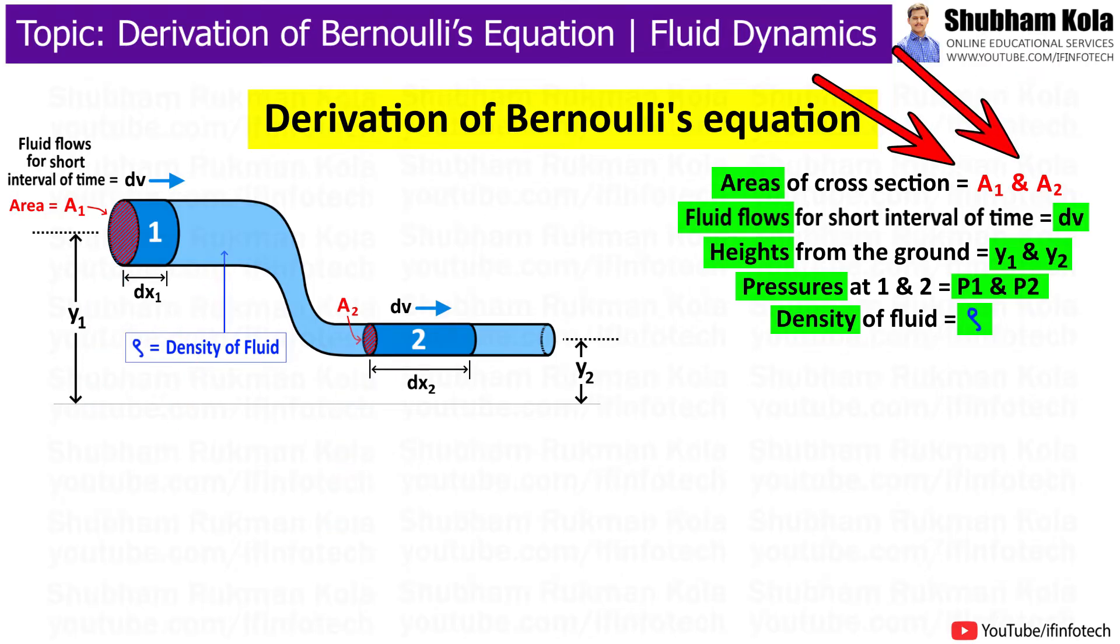The area of cross-section represents as A, the flow speed represents as v, height from the ground as y, and pressure p at two different points as shown in figure. Assume the density of incompressible fluid remains constant at both the points and energy of fluid is conserved as there are no viscous forces in the fluid.